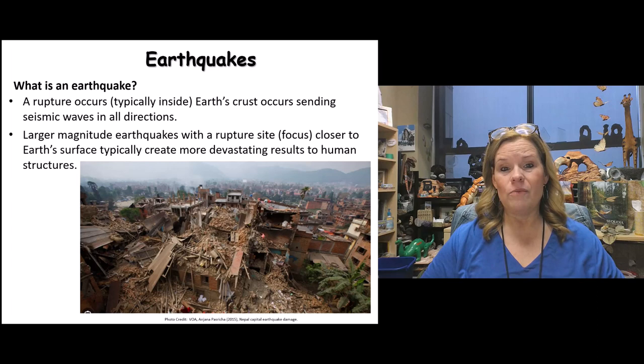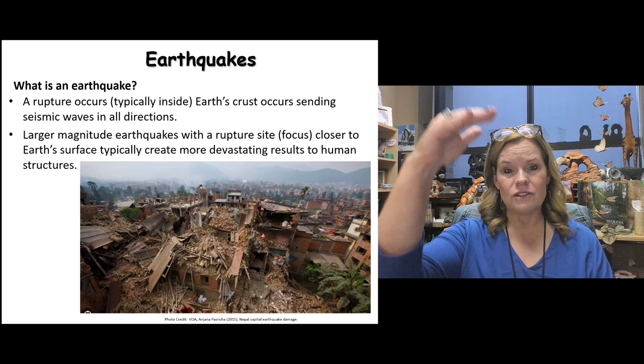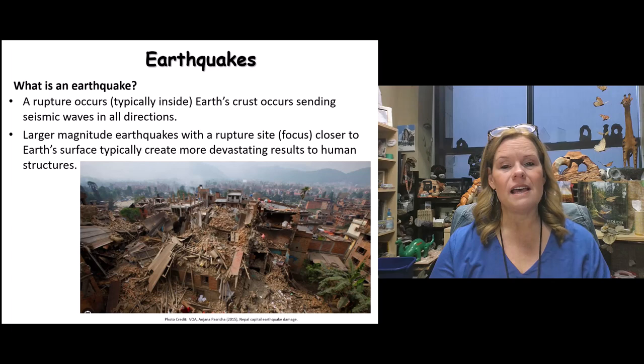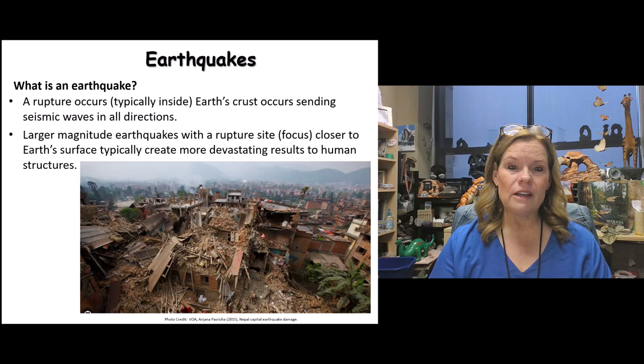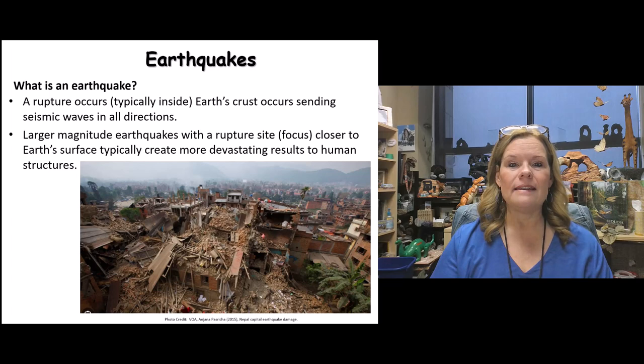The Richter scale can't give a true picture above about 6.5, and it's a logarithmic scale — from zero to one, one to two, two to three, and so on. When you reach the 6.5 to 7 point on the magnitude scale, we use a second scale called moment magnitude. At that level, intensity becomes roughly 30 times greater between steps rather than just 10 times, so it's bigger than a simple logarithmic scale.